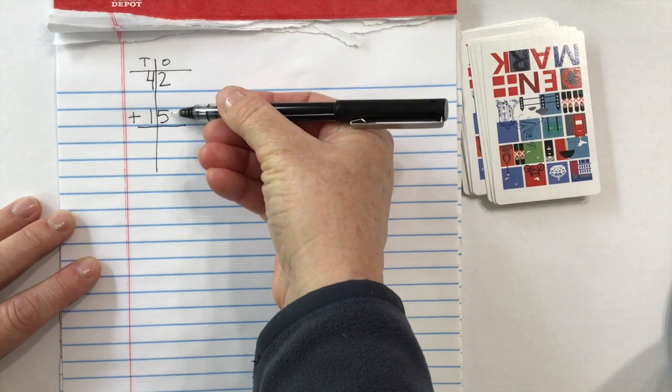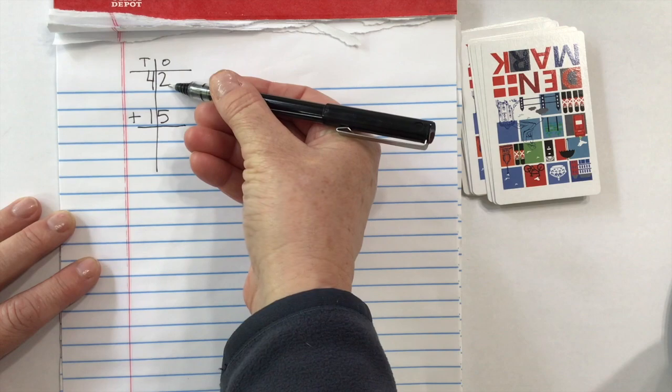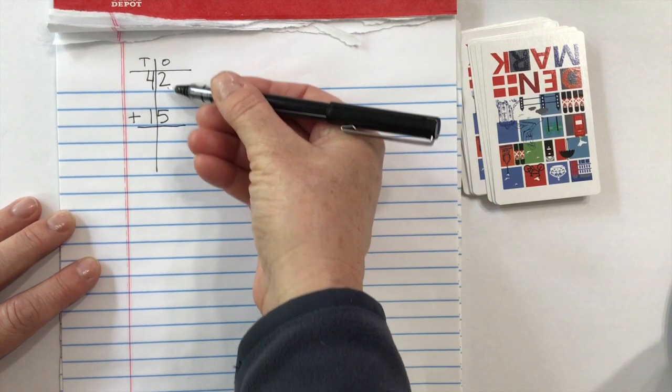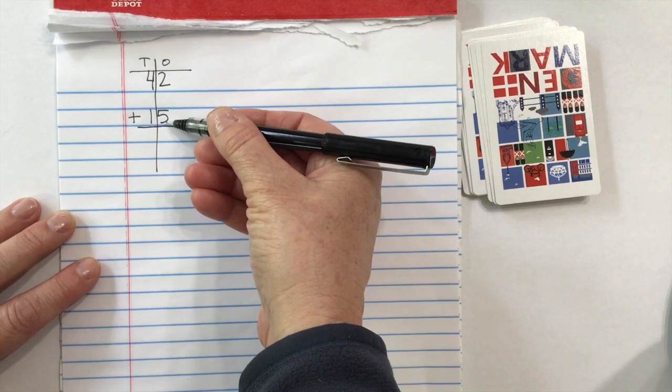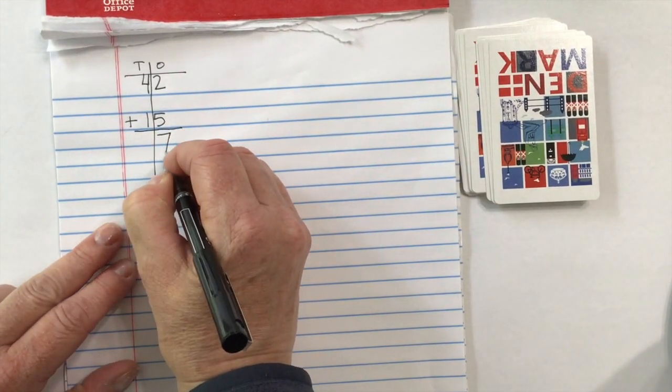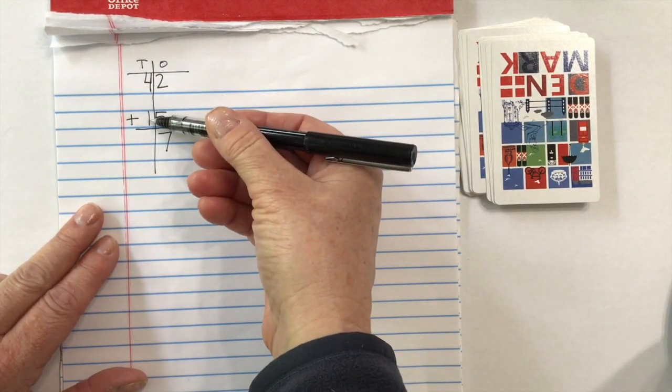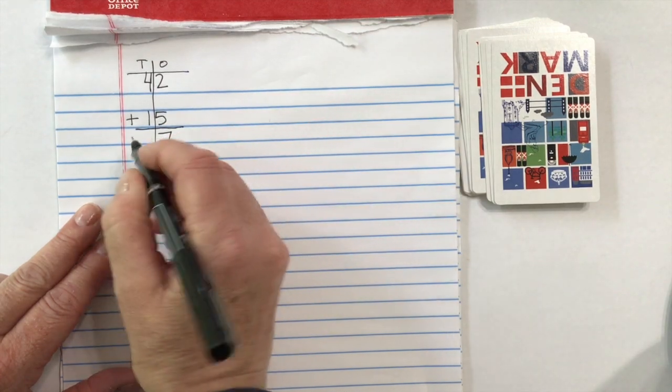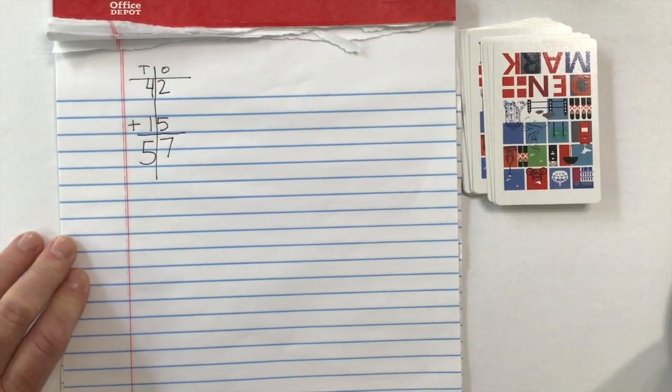We're going to add ones to ones. Four sets of 10 and 2, one set of 10 and 5. So we have 2 and 5 ones. I'm going to count up: 5, 6, 7. Seven ones. Four sets of 10 and one more set of 10, five sets of 10. My answer for this problem is 57.